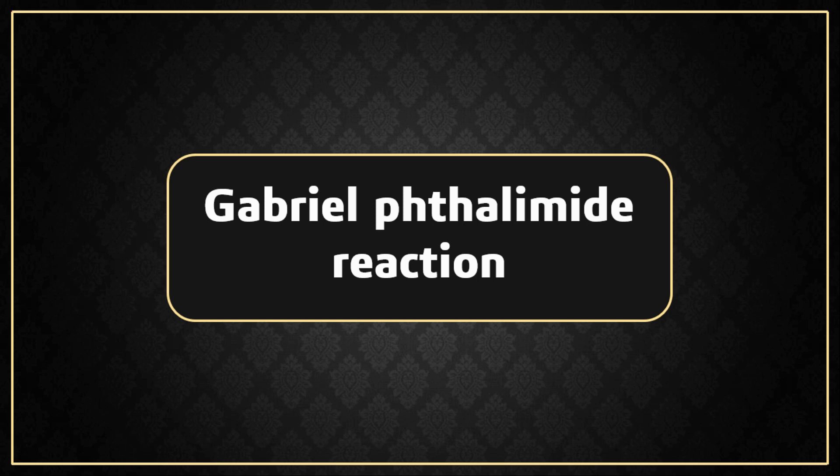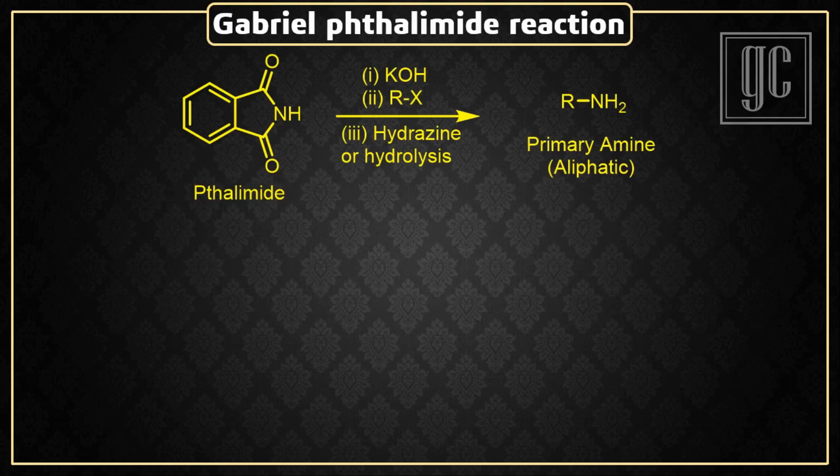In this video, we are going to discuss the Gabriel-Thalamide reaction. In this reaction, primary amines form as the final product. Thalamide in the basic medium interacts with haloalkanes, and followed by hydrolysis, primary amines are formed. This is the industrial way to produce primary amines at large scale.